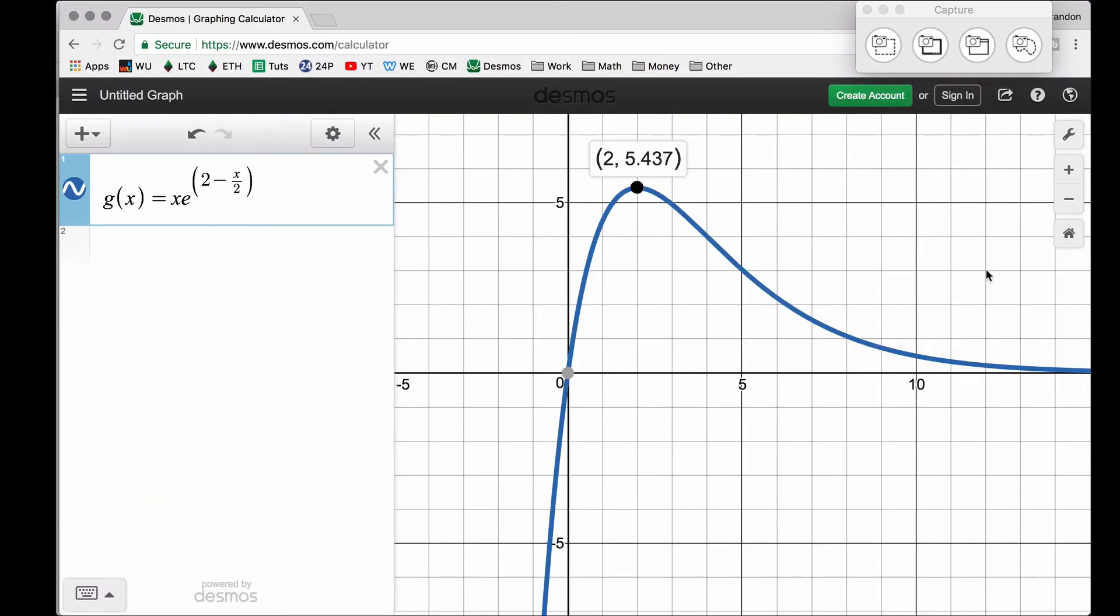But to motivate that idea for the future video, I do want to show you this function. And notice when x is equal to two, it turns out we actually have a maximum. But what I want you to understand here is that when x is two, the derivative of this function is equal to zero. We do have a horizontal tangent line right there.